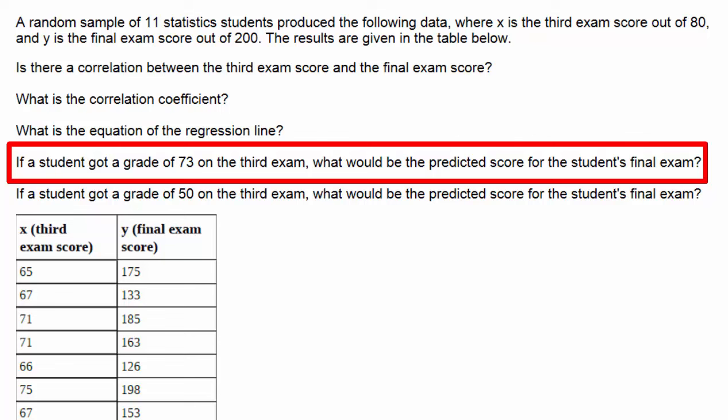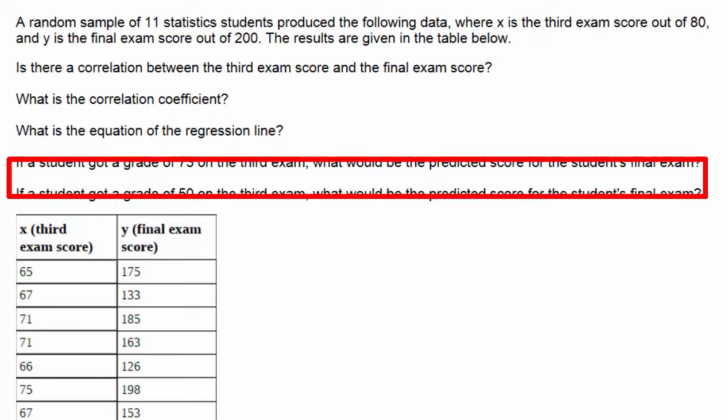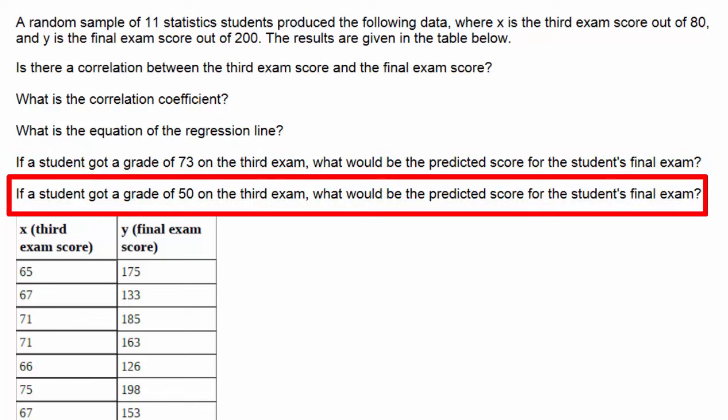If a student got a grade of 73 on the third exam, what would be the predicted score for the student's final exam? If a student got a grade of 50 on the third exam, what would be the predicted score for the student's final exam?